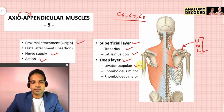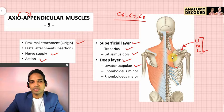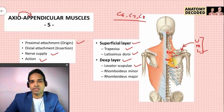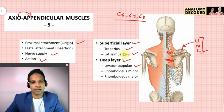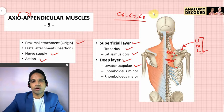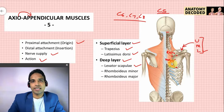The deep muscles — levator scapulae has proximal attachment from the transverse processes of the upper four cervical vertebrae. Distal attachment is along the medial border of the scapula above the root of the spine. Opposite the root of the spine is rhomboid minor, and below the root of the spine is rhomboid major. Nerve supply of levator scapulae is directly from C3 and C4, as well as from the dorsal scapular nerve (C5). Action is elevation of the scapula.